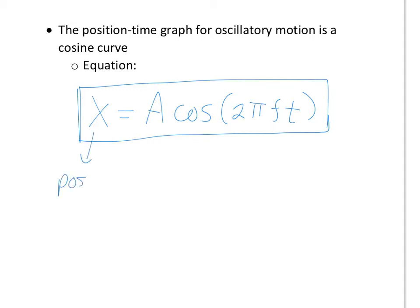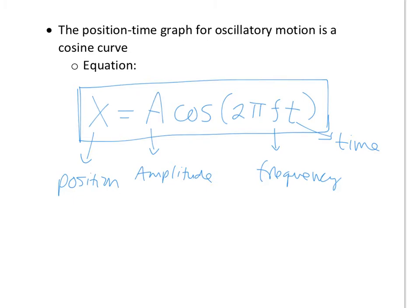In the equation x = A cos(2πft), x is position, A is the amplitude, 2 pi is a constant, f is the frequency, and t is any arbitrary time. So this equation will describe the position x at any time t. This time t is not the same as the period. Frequency is 1 over period, so this could also be written as cosine of 2 pi t over T.